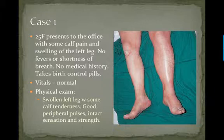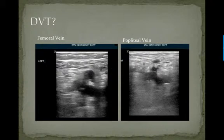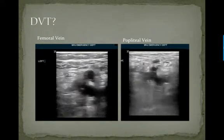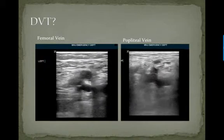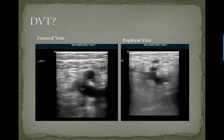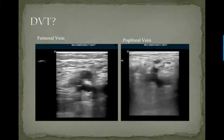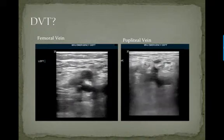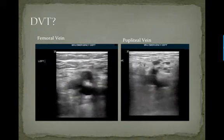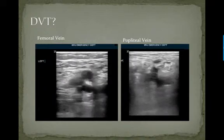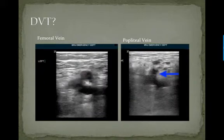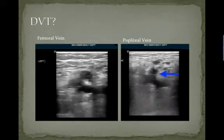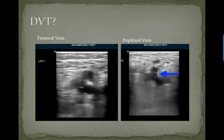Here is your bedside ultrasound that you've just performed. On the left are the femoral vessels and on the right are the popliteal vessels. As you can see on the left, the common femoral vein is not compressing, and on the right the popliteal vein is not compressing. So this patient has a DVT.